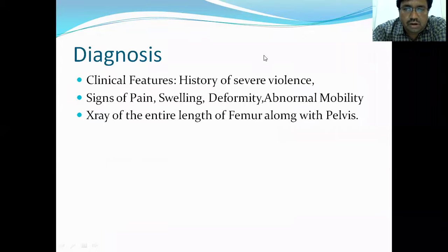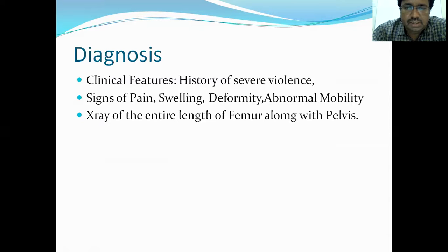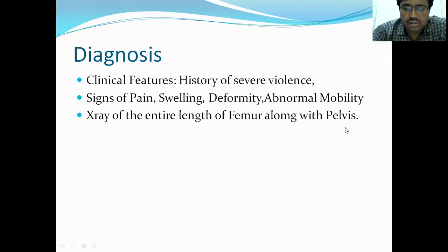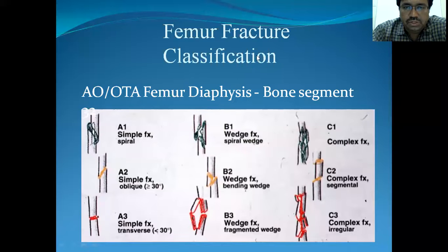The clinical features: you should ask for a history — there is usually a history of severe violence or trauma. Signs of fracture like pain, swelling, deformity, and abnormal mobility will be present. X-ray is the gold standard for diagnosis. X-rays are usually taken with one joint above and below, and also taken along with the pelvis so that we don't miss any pelvic fractures, which are usually associated.